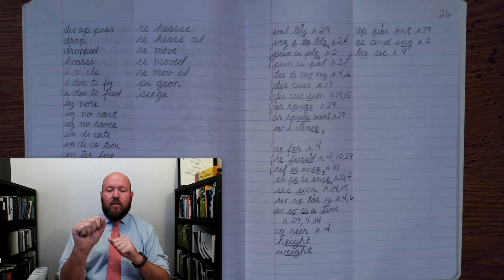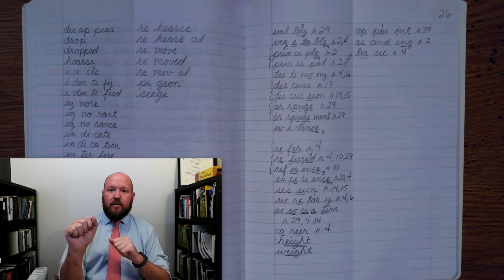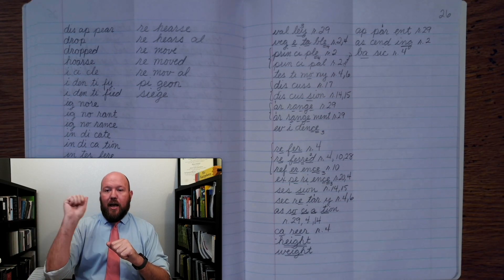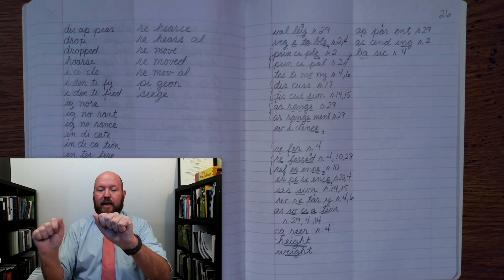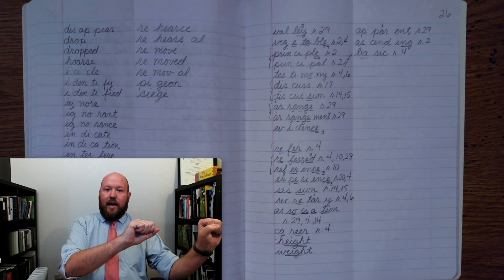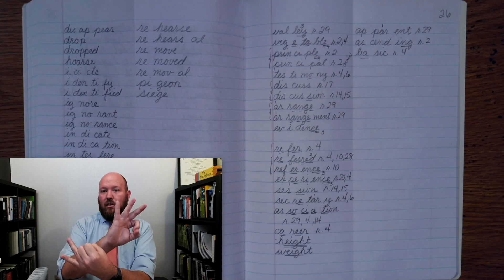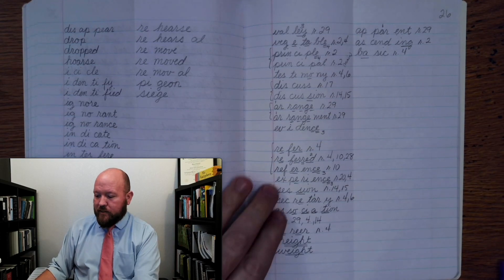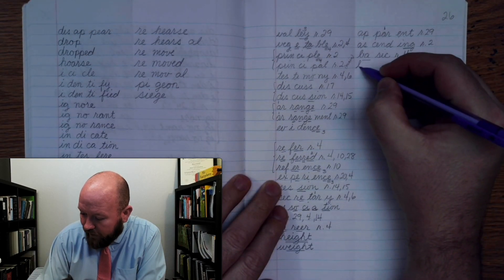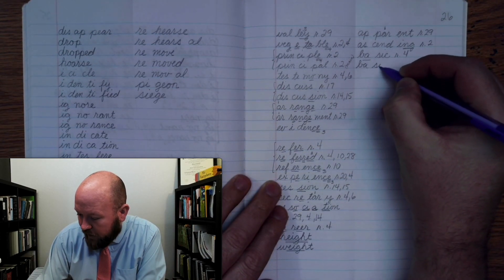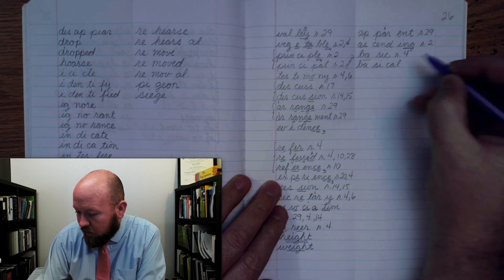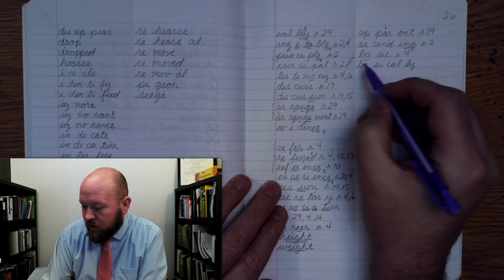Is the emphasis on that? The emphasis is going to be on the bay. Basically. Right? So we're not going to have to double the C. Okay? So it's going to be bay, S, I, cal lit. Bay, S, I, C, A, L, L, I. Basically. Bay, S, I, cal lit.